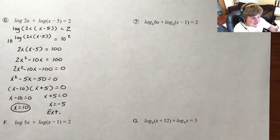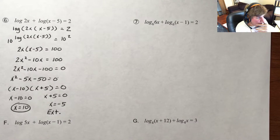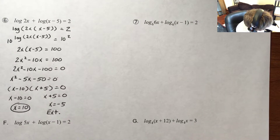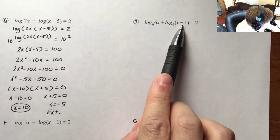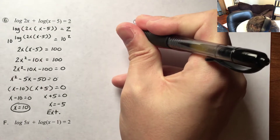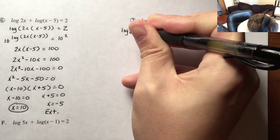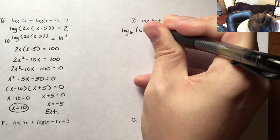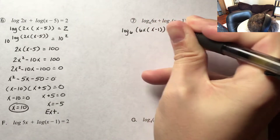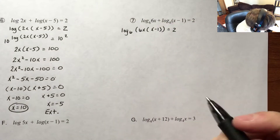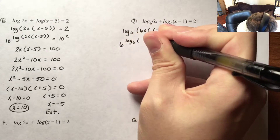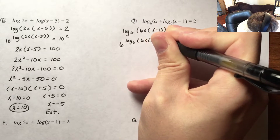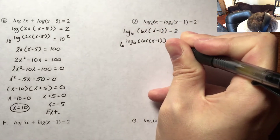Number 7 is basically the same thing as 6, but the only difference is that my base is 6. Since I'm adding, the product property tells me I'm multiplying these parts. So I reduce this down to log base 6 of 6x times x minus 1 equals 2. I have log base 6, so I have to raise 6 to the power of log base 6 of 6x times x minus 1, which equals 6 squared.